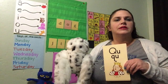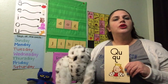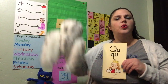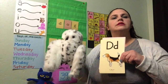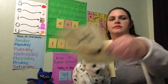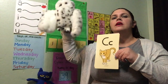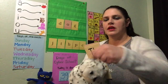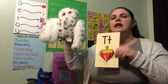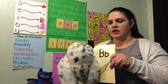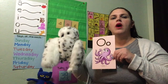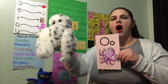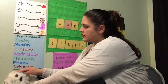And Mama Echo is going to go over some of our letters and letter sounds with us today. Remember, when Mama Echo is down, you listen. When she flies up, you say it with me. Q-U-Queen-Q. J-Jug-J. D-Dog-D. C-Cat-C. T-Tot-T. B-Bat-B. O-O-Octopus-O. Nice job with our letters and our letter sounds this morning.